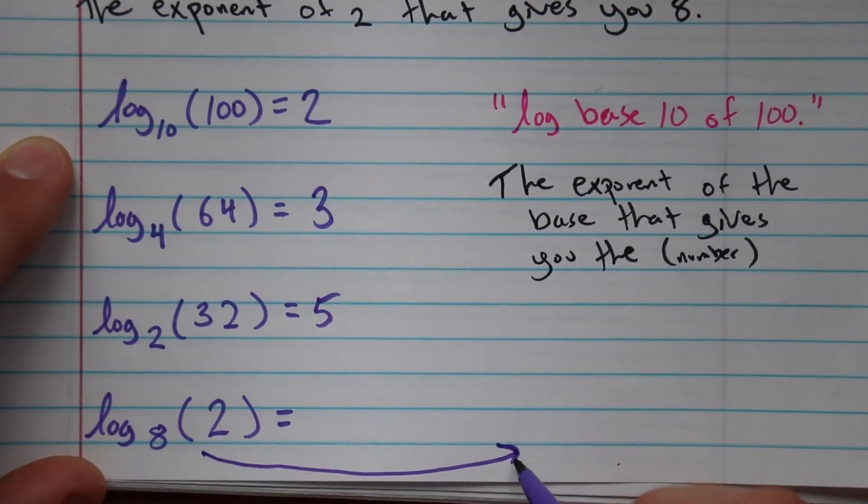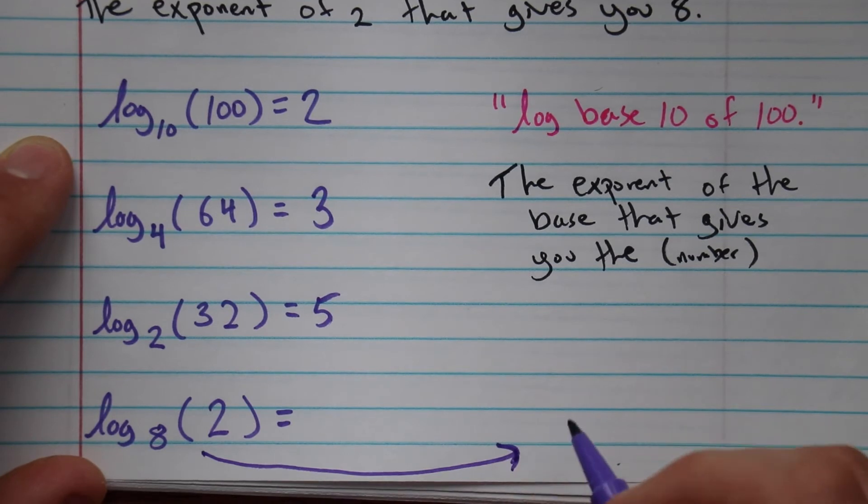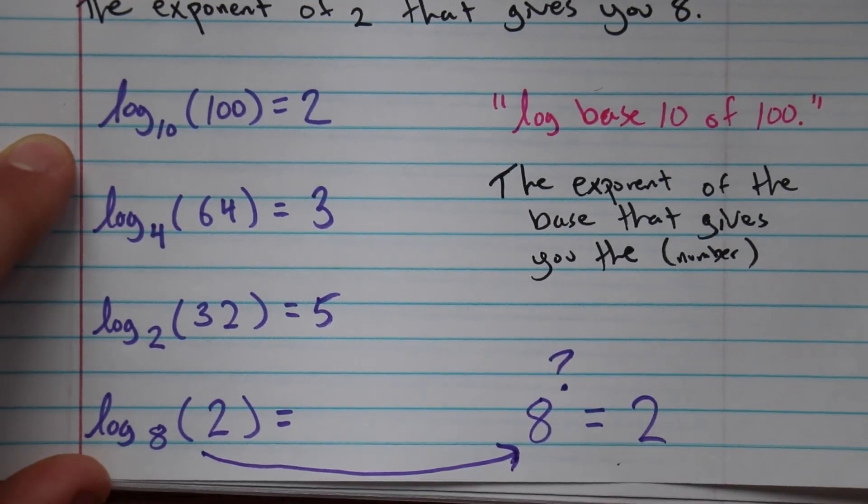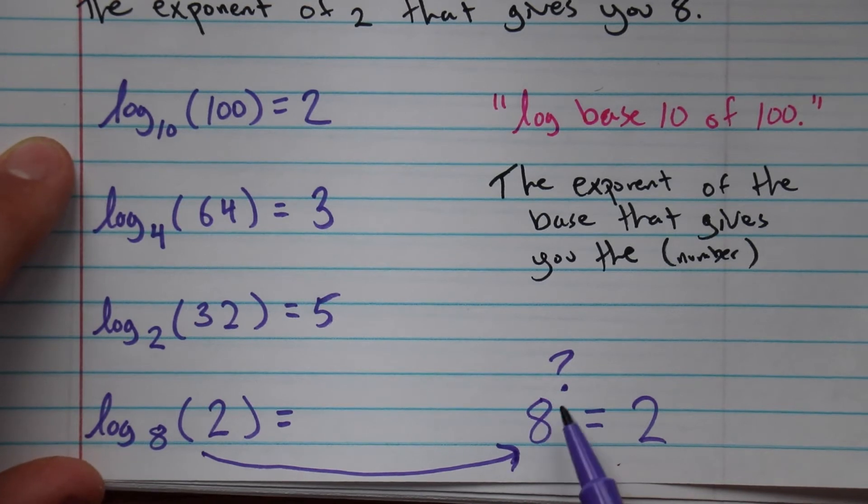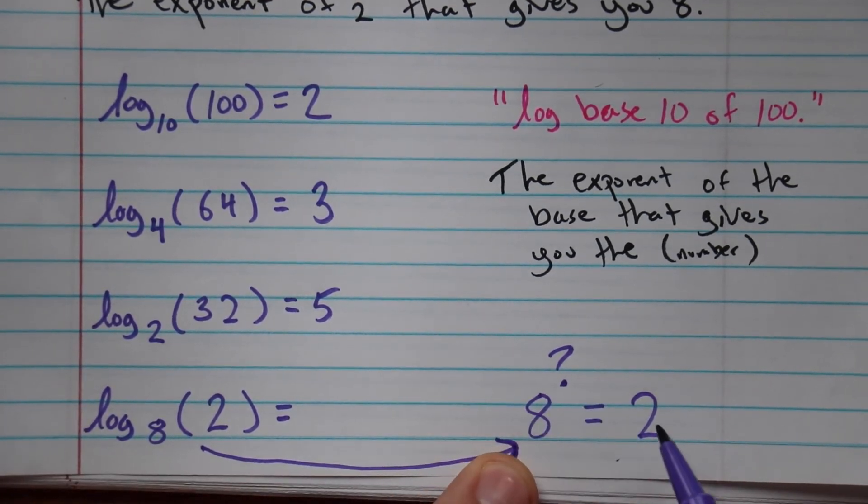Log base 8 of 2 is the exponent of 8 that gives you 2. Let's think about that for a second. Sometimes it's easier to rewrite it. So it's the exponent of 8 that gives you 2. That's kind of odd. You want to like reduce it.